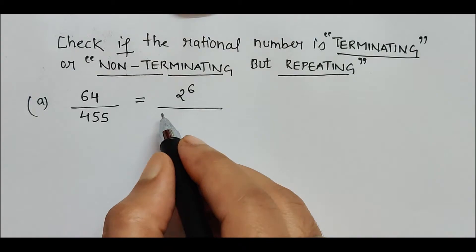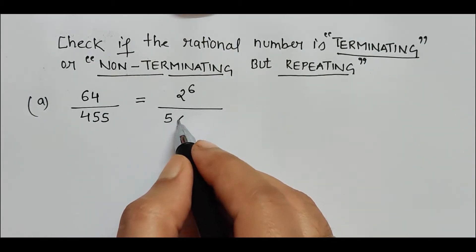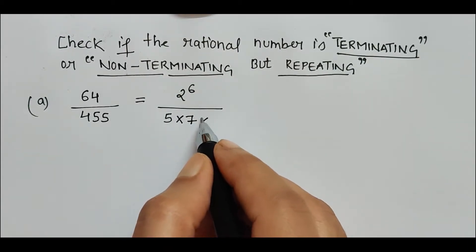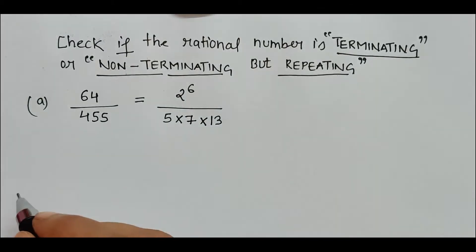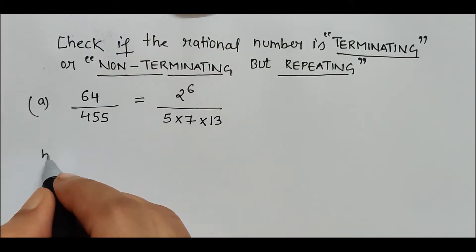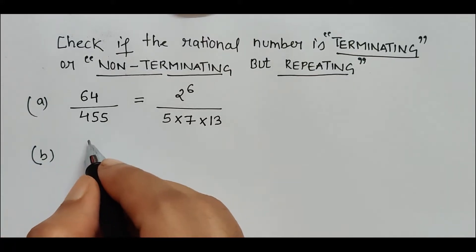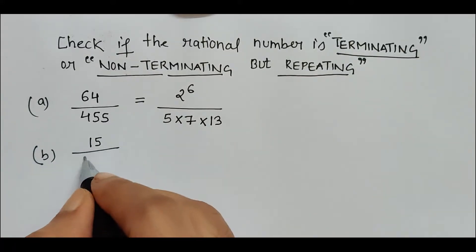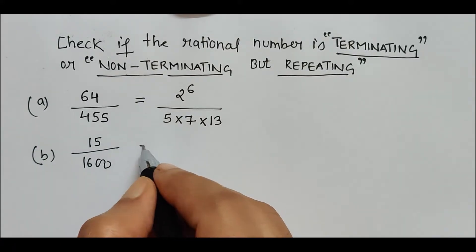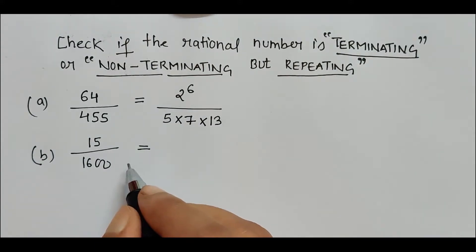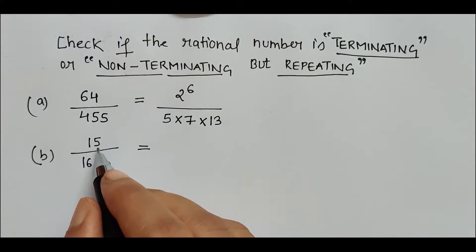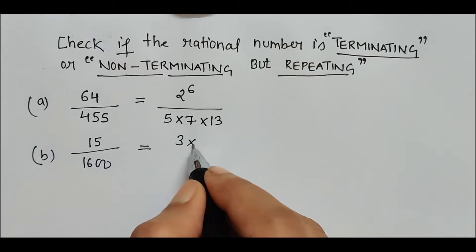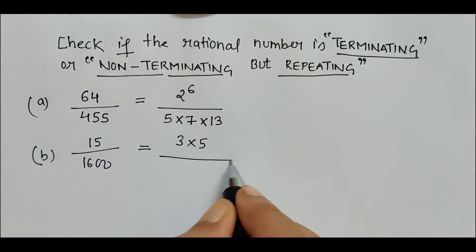Now if I take another rational number, let's say 15 upon 1600. Here again my step would be to write it in the prime factor form. So 15 can be written as 3 into 5, these are prime factors.